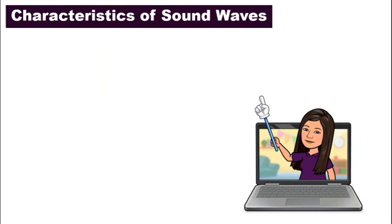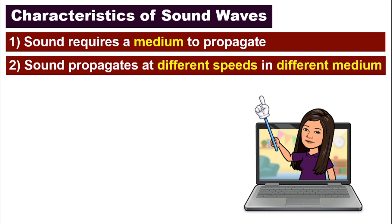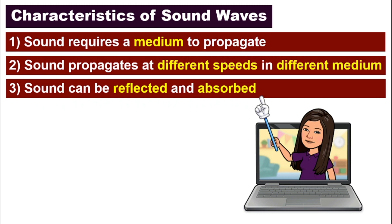Let us review. What are the three characteristics we discussed today? Number one: sound requires a medium to propagate — it can be solid, liquid, or gas, but it cannot propagate through vacuum. Remember that in outer space it is complete vacuum, so you cannot hear sound unless you use a walkie-talkie. Number two: sound propagates at different speeds in different mediums — fastest in solid, then liquid, and slowest in gas. Number three: sound can be reflected and absorbed. A good sound reflector has a surface that is hard and smooth. A good sound absorber has a surface that is soft and rough.